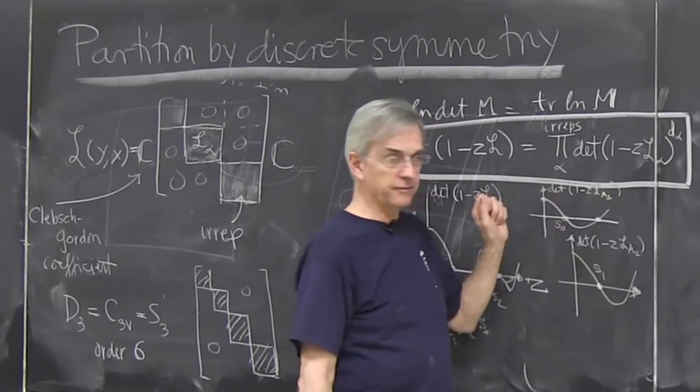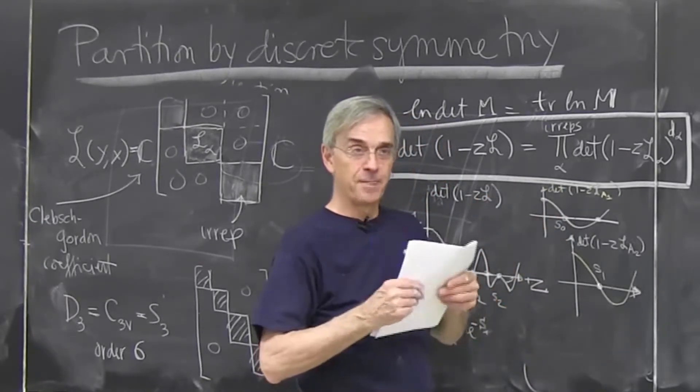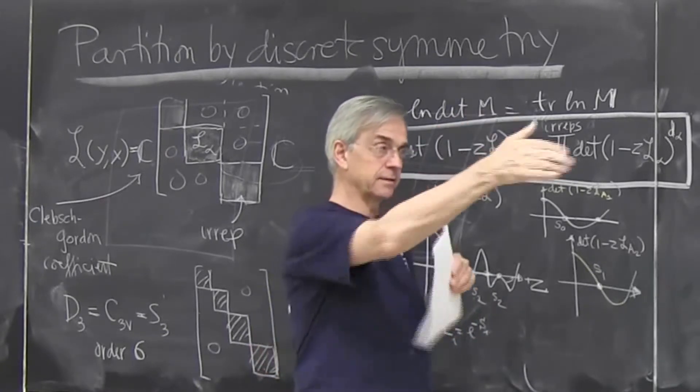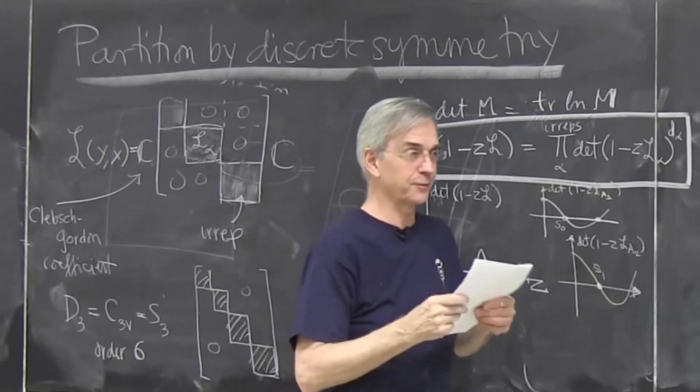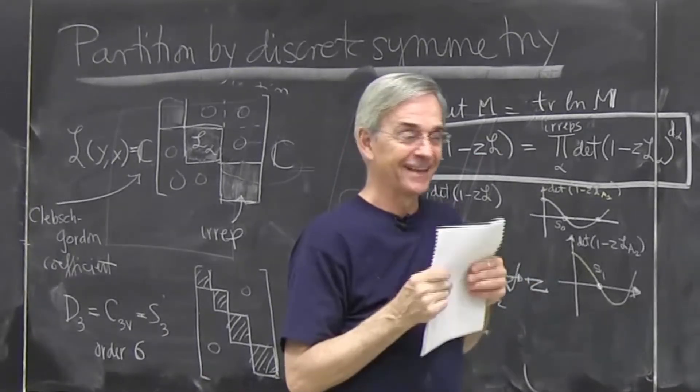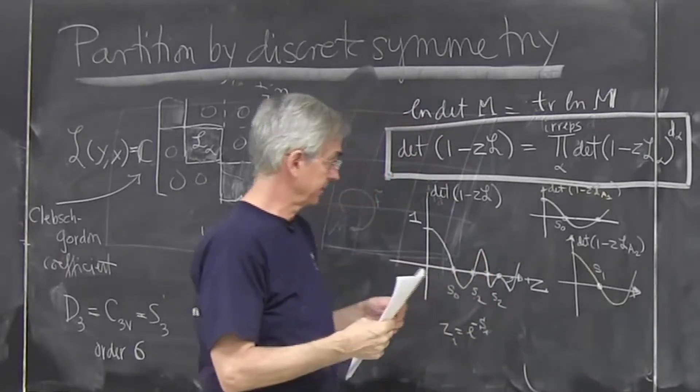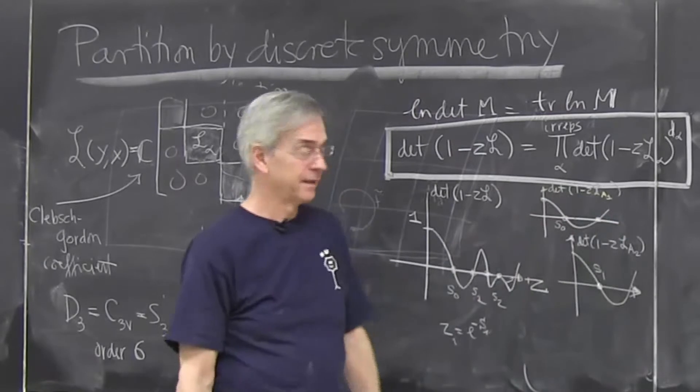So once we knew how to factorize, we compute the escape rate for 3-disc to 100 digits. But our competition, like the very good book by Pierre Gaspar that Kimberly has bought for real money, they can do it to 3 digits. And the reason is that, you know, this kind of thinking eventually really pays off.